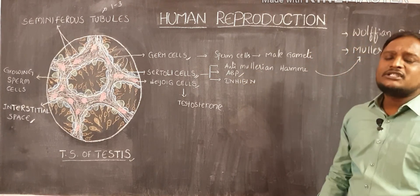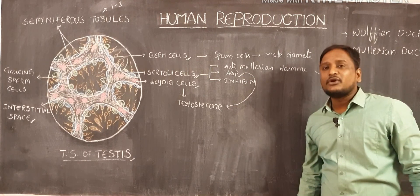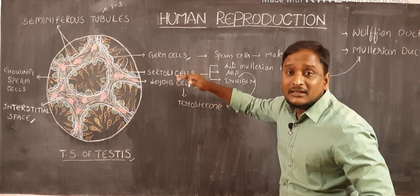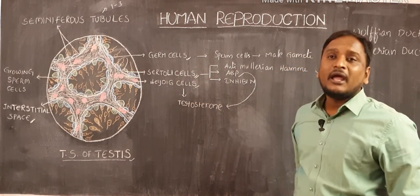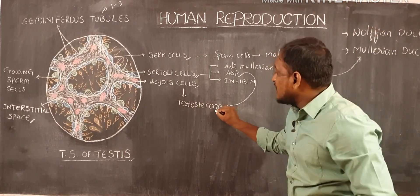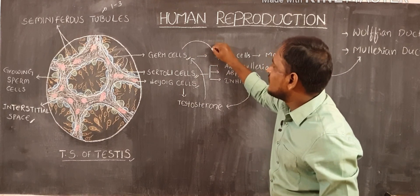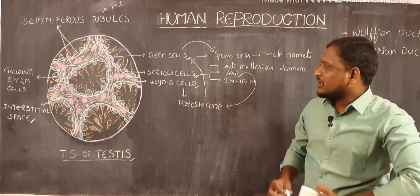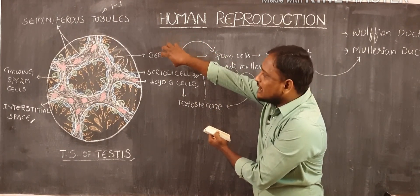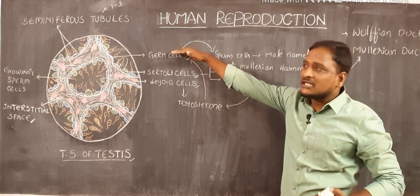Coming to androgen binding protein (ABP): it helps to increase the concentration of testosterone. Testosterone is actually secreted from Leydig cells, and that testosterone concentration will be increased by the help of androgen binding protein. When the testosterone concentration increases, that increased concentration of testosterone acts on germ cells, so that germ cells will start producing sperm cells. That means androgen binding protein indirectly stimulates the germ cells to produce sperm cells.